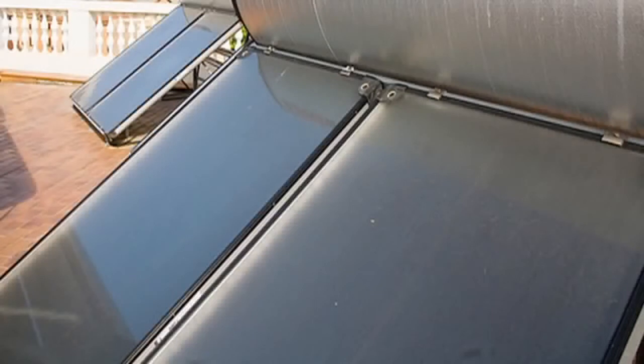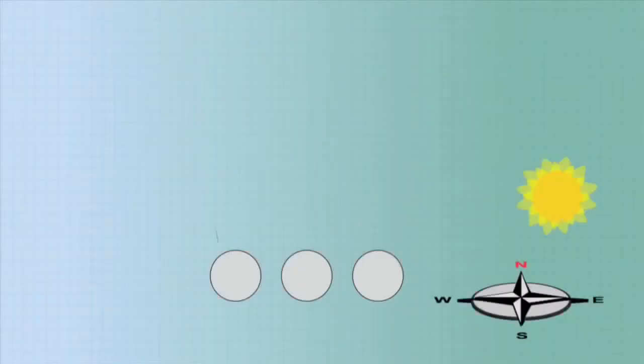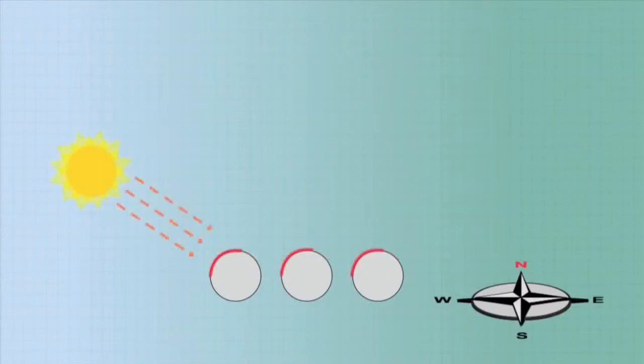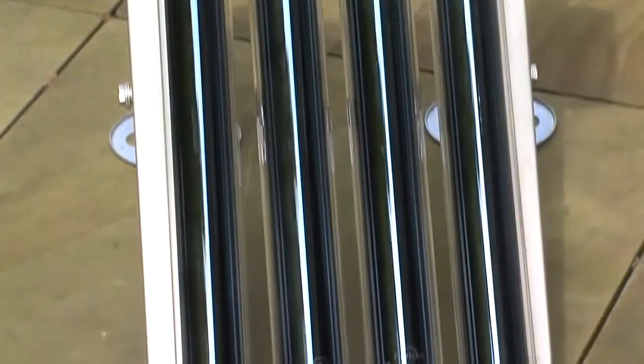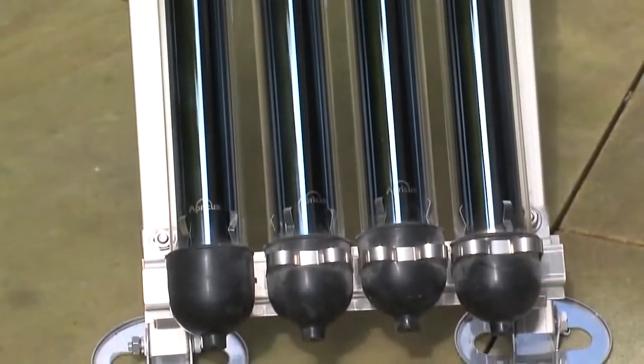There are two collector types to choose from: flat plate and evacuated tubes. Evacuated tubes have the advantage of receiving perpendicular radiation for a greater part of the day. This, combined with their vacuum insulation, means good winter performance.